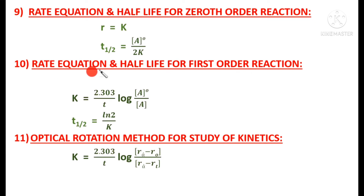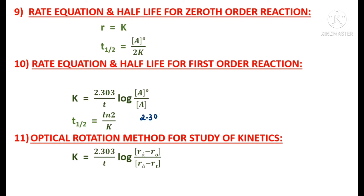For the first order reaction, the rate equation is: k = (2.303/t) log([A]₀/[A]t), where [A]₀ is the initial concentration and [A]t is the concentration at time t. The half-life for a first order reaction is: t½ = ln2/k = (2.303 log2)/k = 0.693/k.